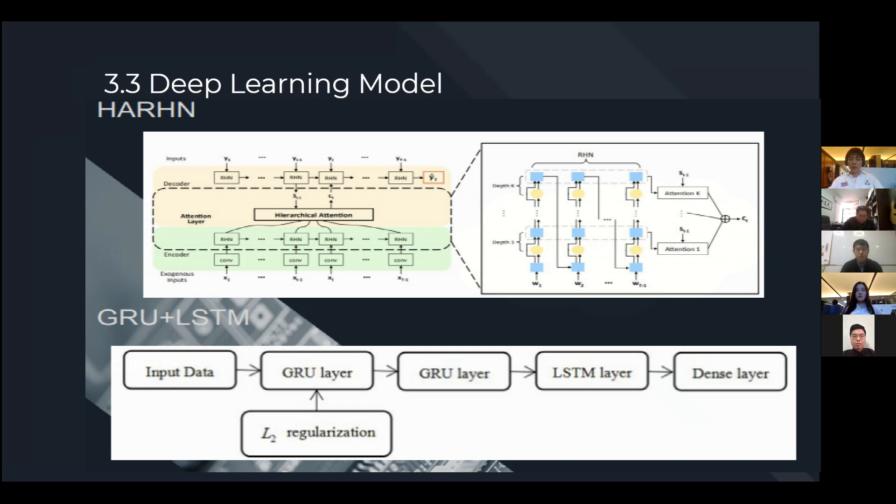The second important structure is a gate recurrent unit combined with long short-term memory. That is, the input data first goes through multi-GRU layers and then go through multi-LSTM layers. In this way, the performance is better than a single LSTM model.